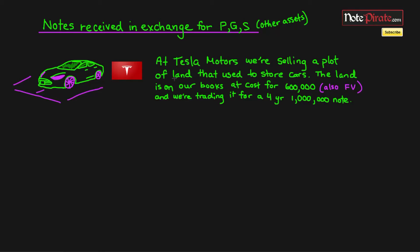In this example we are an executive at Tesla Motors, and we're selling a plot of land that is used to store cars. Essentially it's a parking lot. On our books the cost of this plot of land is $600,000, and that's also its fair value. We're trading it for a four year, one million dollar note.